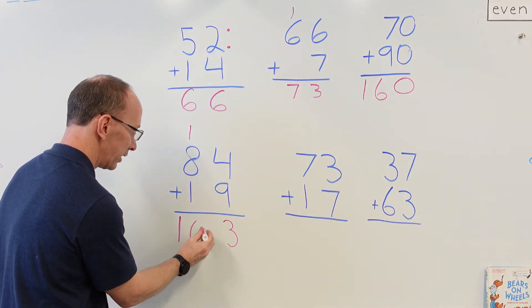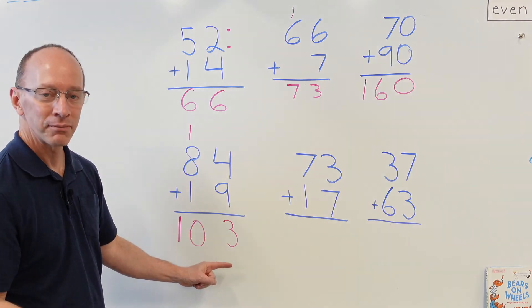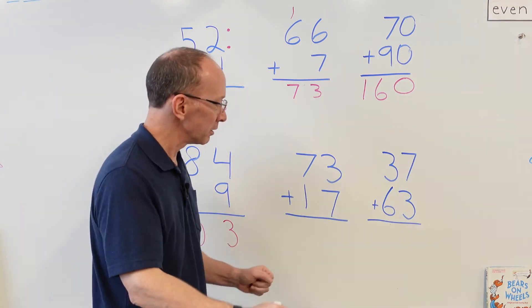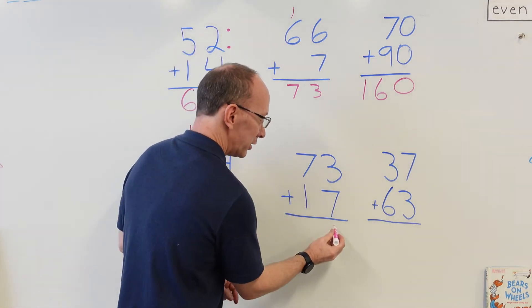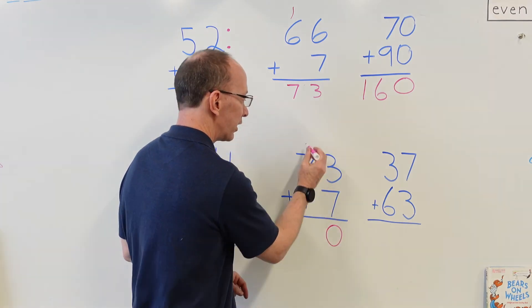Let's go over to our next problem. Seven plus three: seven, eight, nine, ten. We take the zero right here, carry the one.